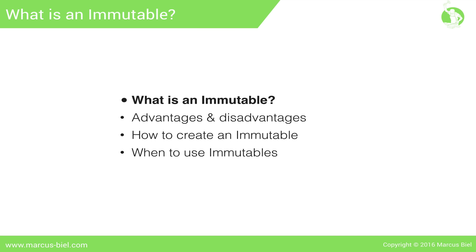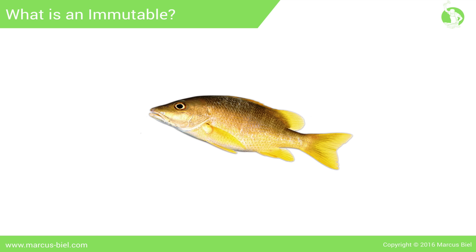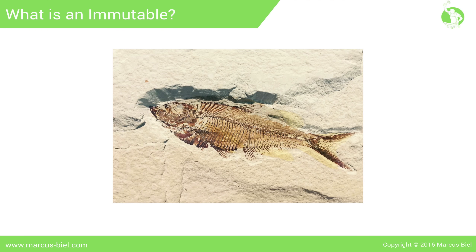So let's start with the most important question: what is an immutable class? In short, an immutable class is a class whose instances cannot be modified. The information contained in each immutable object is provided when it is created and is frozen for its lifetime. Once an immutable object has been created, it is read-only forever — fixed like a fossil.